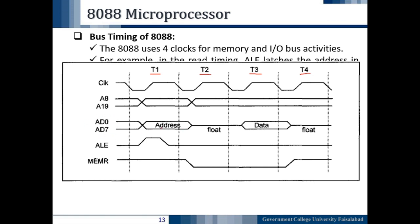The AD0–AD7 multiplexed address/data bus will be treated as the address bus, and the remaining address bits A8 to A19 also start latching. In the second clock cycle T2, the latching of the address completes and the 20-bit address is available on the address bus to fetch the data from the target location.